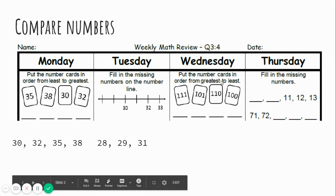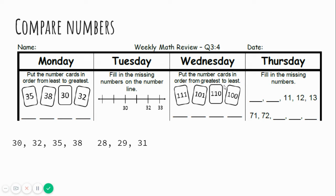Put the number cards in order from greatest to least. So that means the biggest number to the smallest number. This one was least to greatest. Now we're doing greatest to least. Which one is the biggest number? We see 100 in all of them. Now let's look at the tens place. I see a 1 in the tens place, 0, a 1 in the tens place, and 0.